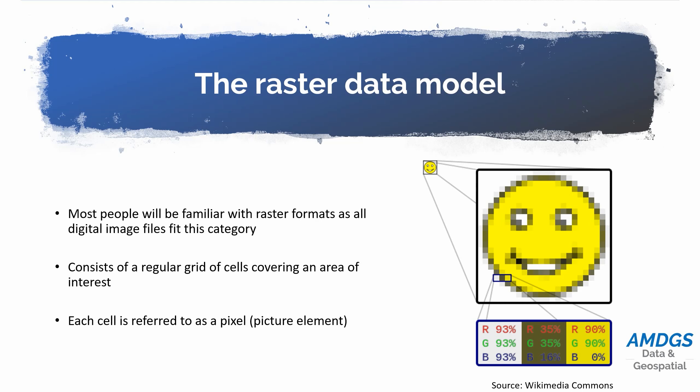Those three values relate to the three colours that we can see — the human eye can see red, green and blue, and every colour we see is a combination of those three mixed together. So a colour photograph for each pixel has one value for how much red light there is, one for how much green light, and one for how much blue light. We can actually store other information in rasters too — anything that's continuous, rasters are good for representing.